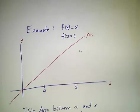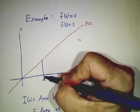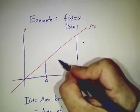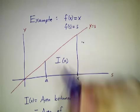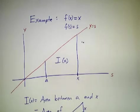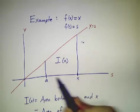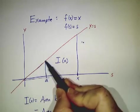Well, I(x) is the area between a and x. So this is I(x). And what is that area? Well, it's the area of this big triangle minus the area of this little triangle.